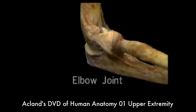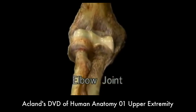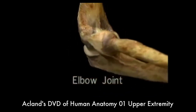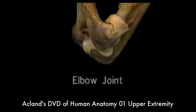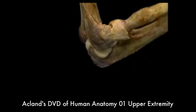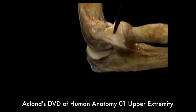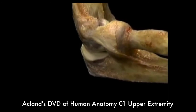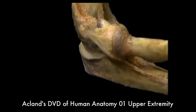Here's the joint with its loose capsule removed and its ligaments intact. Here's the front of the joint in extension, and here's the back of the joint in flexion. The key structure to understand is this remarkable ligament, which not only holds the radial side of the elbow together, but also holds the rotating head of the radius in place against the ulna.